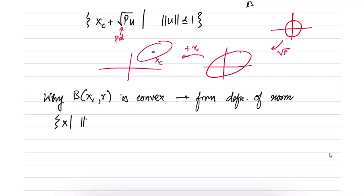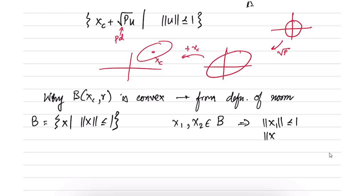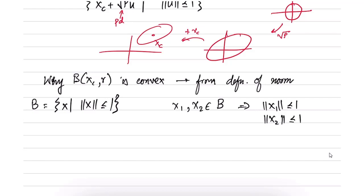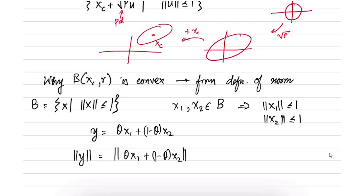Let us prove convexity for the unit norm ball: the set where norm of x is less than or equal to 1. Let x1 and x2 be two points in B, so the norm of x1 is less than or equal to 1, and the norm of x2 is less than or equal to 1. Consider the point y equal to θ·x1 plus (1 minus θ)·x2. We need to prove that the norm of y is also less than or equal to 1.